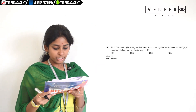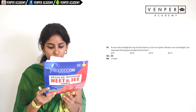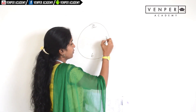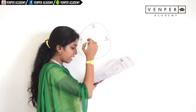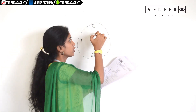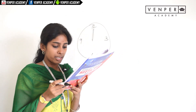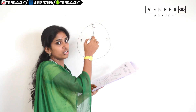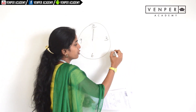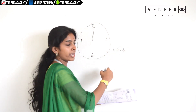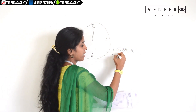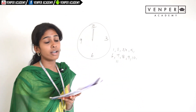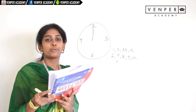Question sixteen: at noon and at midnight, the long and short hands of a clock are together. Between 12 noon and 12 midnight, how many times does the long hand take over the short hand? Counting after 12: 1, 2, 3, 4, 5, 6, 7, 8, 9, 10, and 11 PM — the long hand takes over 11 times. So the answer is option three.